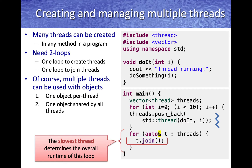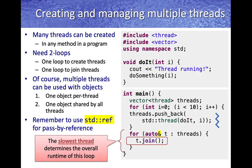You can use the same pattern to run multiple threads with objects, creating threads on one object in each iteration. You can use either a pattern where one object is used per thread, or a single object shared by all threads. Remember to use the std::ref wrapper when you want to pass by reference to the different threads.